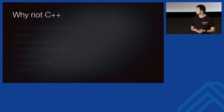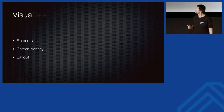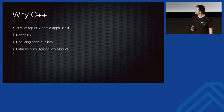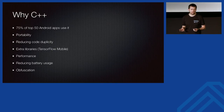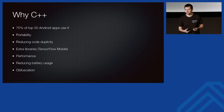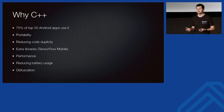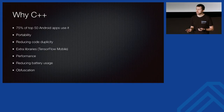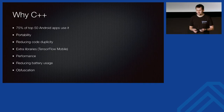Last but not least: obfuscation. Sometimes you have secrets in your code you don't want to give away to competitors. If you've tried decompiling Java bytecode, you can see everything. If you don't use special obfuscation techniques in Java, competitors get everything. If you compile C++ code with optimization flags, it's a bit harder to reverse-engineer.